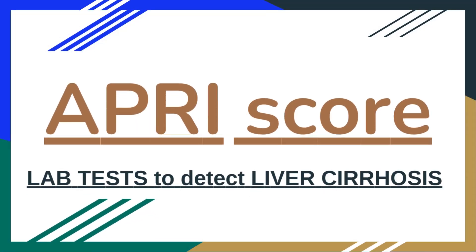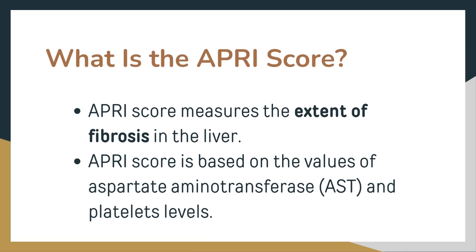APRI score — lab tests to detect liver cirrhosis. The APRI score measures the extent of fibrosis in the liver. It is based on the values of aspartate aminotransferase, AST, and platelet levels.